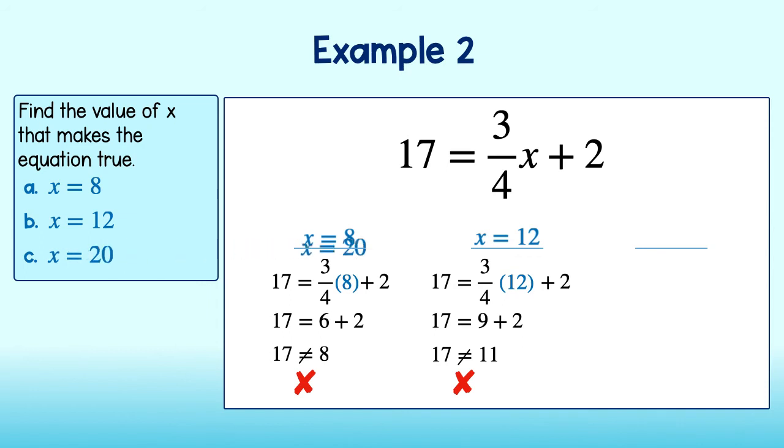Okay, let's try x equal to 20. First, replace x with 20. 3 fourths times 20 is equal to 15. 15 plus 2 is equal to 17. Since 17 does equal 17, we found the solution. The solution to this equation is 20.